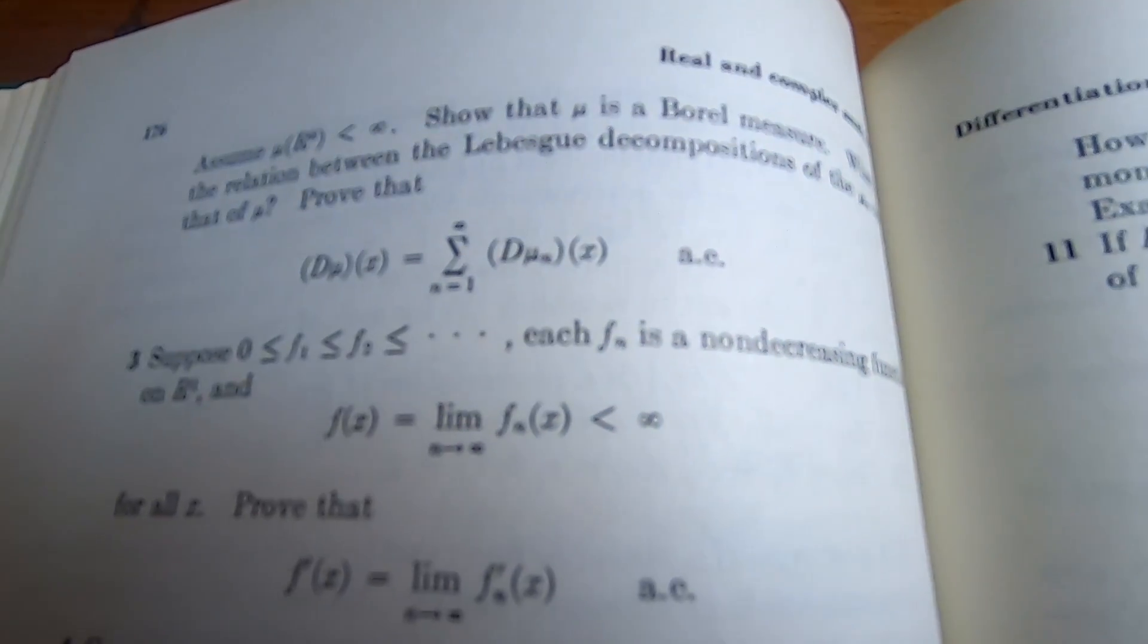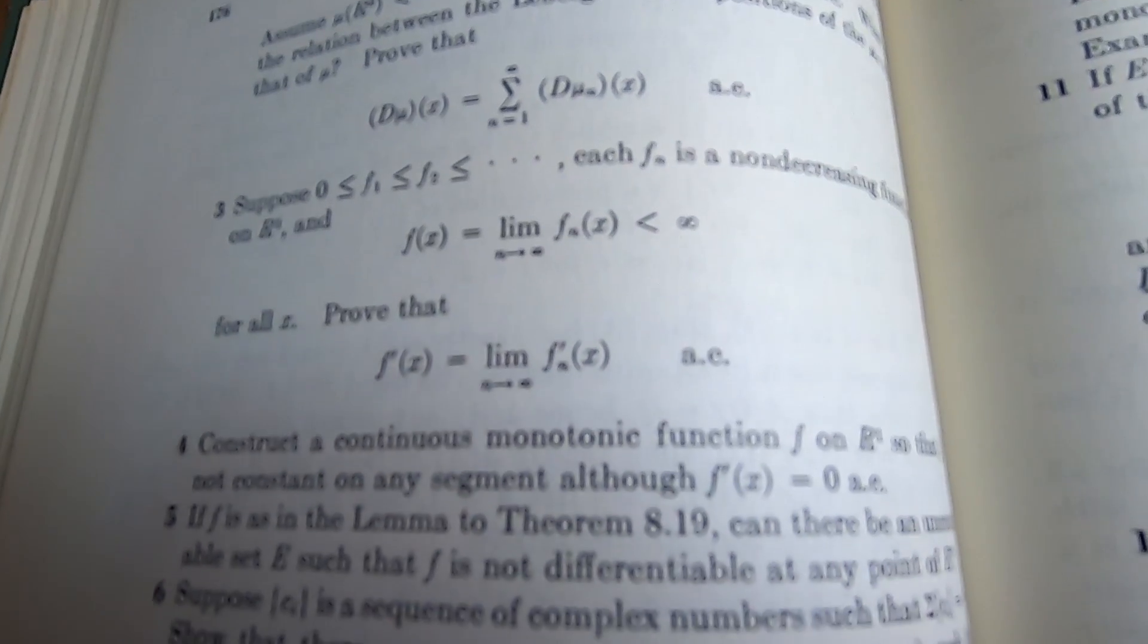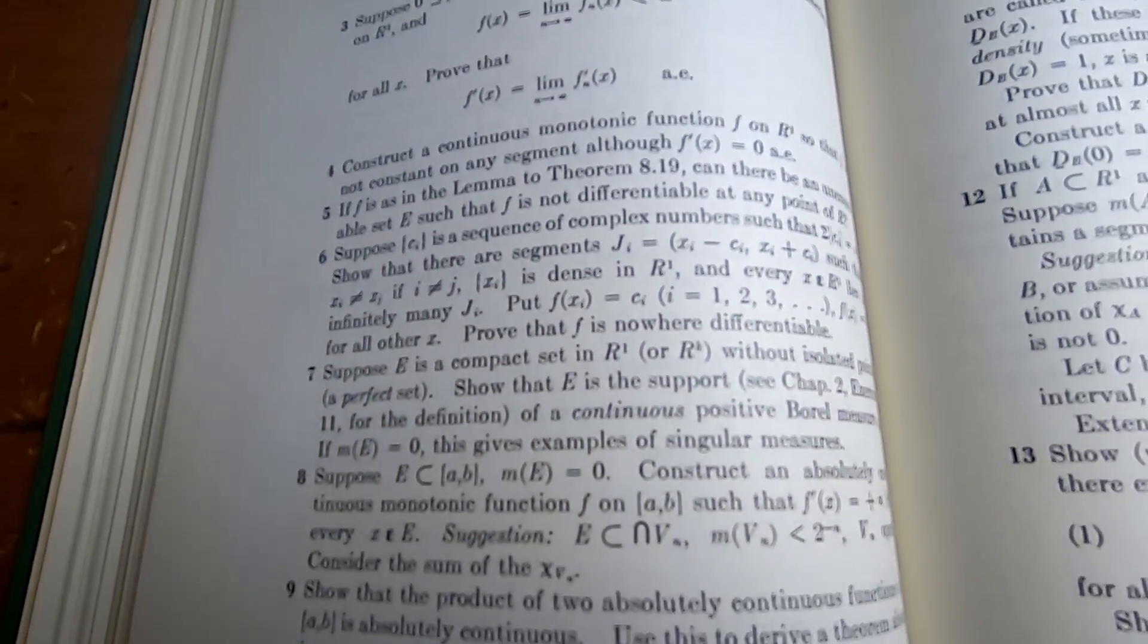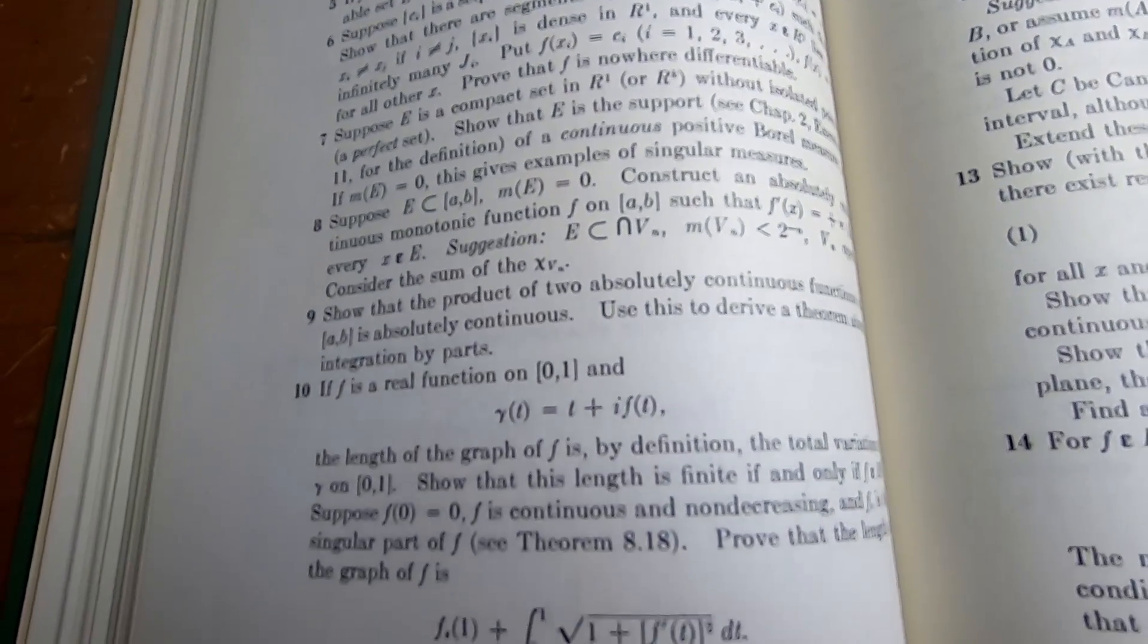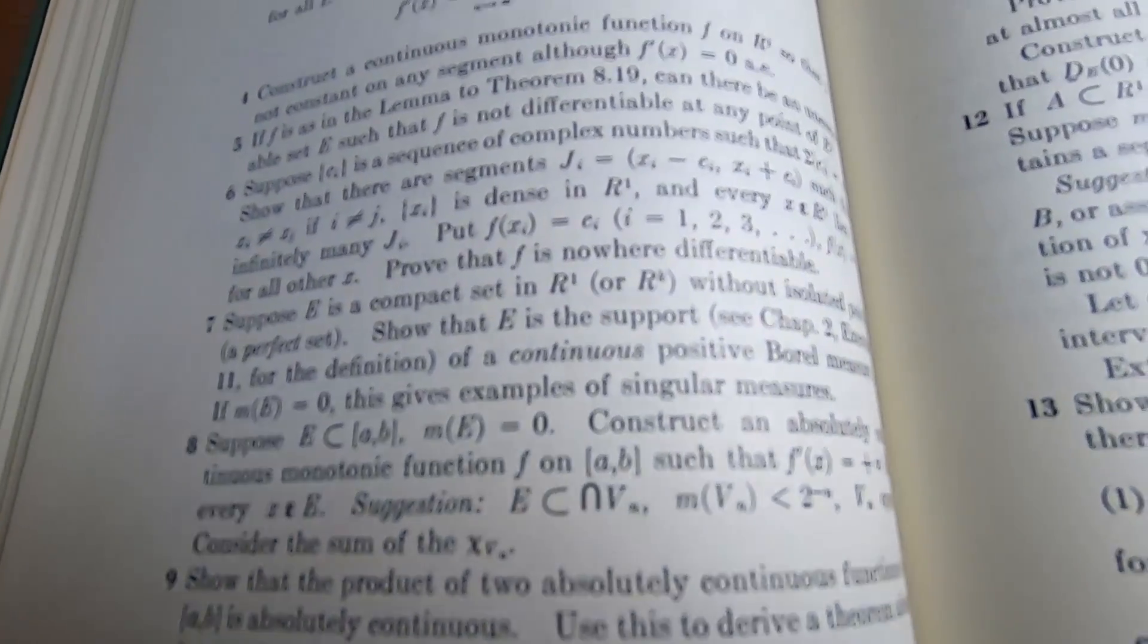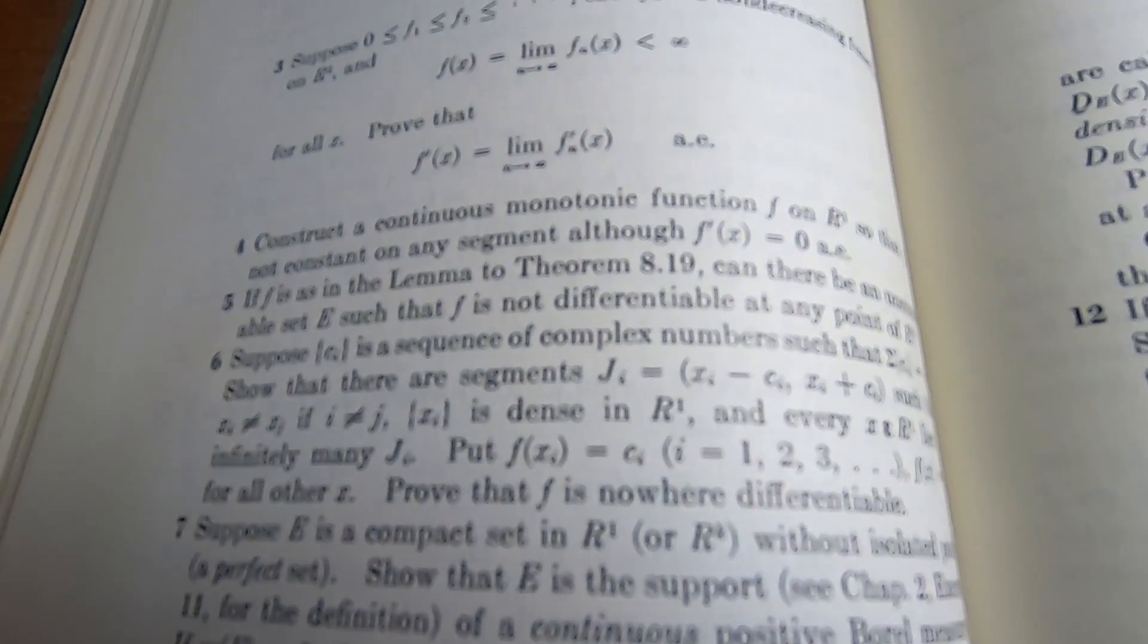One of the biggest downsides of this book is that it doesn't have solutions to the exercises. But that's almost expected at this level. I mean, this is a measure theory book. So finding one with solutions that are decent is quite tough. So it's just kind of an expected thing.